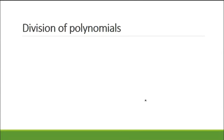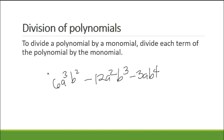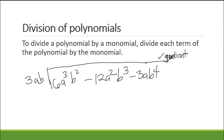Division of polynomials. To divide a polynomial by a monomial, divide each term of the polynomial by the monomial. Example: 6a cubed b squared minus 12a squared b cubed minus 3ab to the 4th, to be divided by 3ab. So we think of numbers and variables that will satisfy or give the same result for each term, for us to subtract and cancel out each term and determine the quotient.